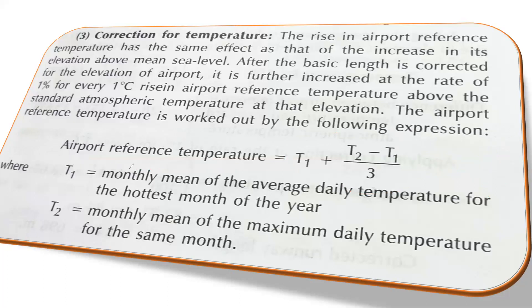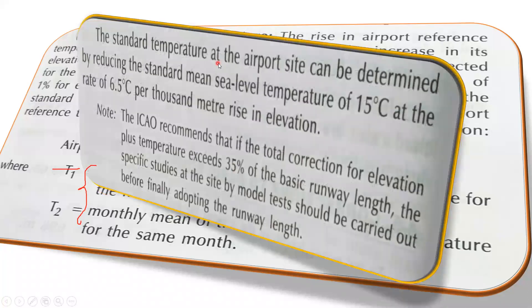T1 is the monthly mean of the average daily temperature for the hottest month of the year, and T2 is the monthly mean of the maximum daily temperature for that same month. The standard temperature at the airport site is determined by reducing the standard mean sea level temperature of 15 degrees Celsius at a rate of 6.5 degrees Celsius per 1000 meter rise in elevation.